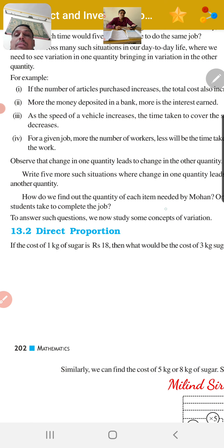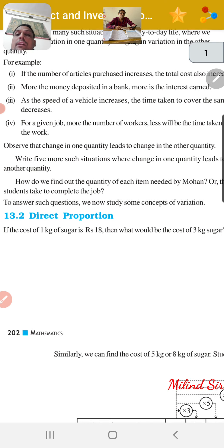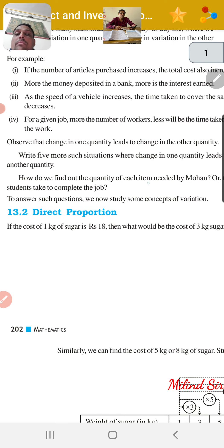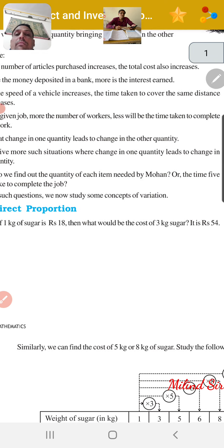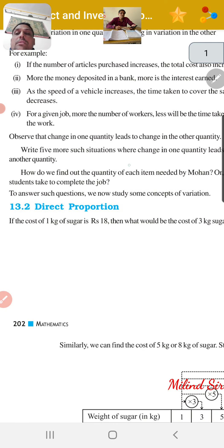More money deposited in a bank means more interest earned. As the speed of a vehicle increases, the time taken to cover the same distance decreases.